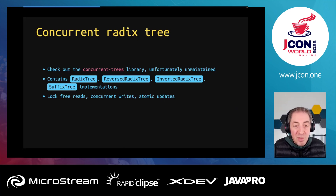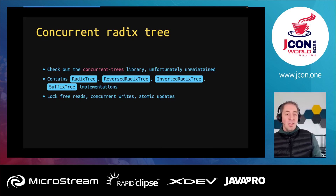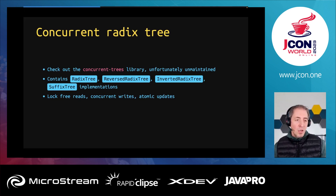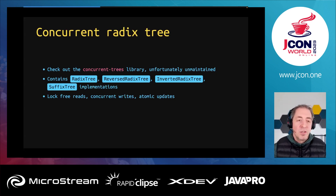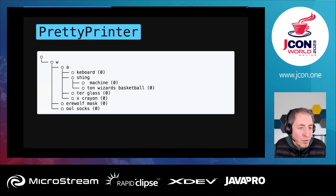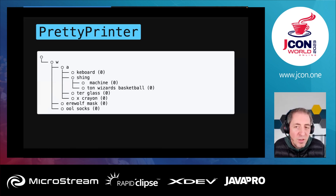Unfortunately, the Concurrent Trees library is not really maintained anymore — the last update was two or three years ago. It works as expected: lock-free reads, concurrent writes on different parts of the tree, and atomic updates so you only see one version at a time. From a feature set it's complete, but there's no ongoing maintenance. There's also a nice pretty printer feature which does ASCII art of how the nodes look — similar to what was drawn earlier as a graphic.